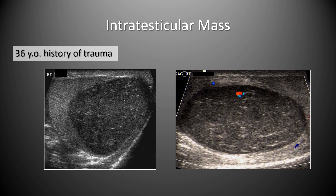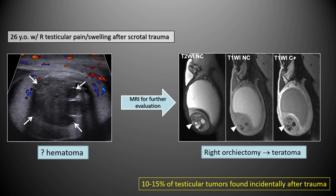A 36-year-old with trauma showed a well-defined, homogeneous, hypoechoic intratesticular mass with mild internal flow on color Doppler. Contrast this with a 26-year-old with right testicular pain after trauma showing a well-circumscribed, mildly heterogeneous solid-appearing mass without internal flow. MRI showed a complex mass with cystic and solid enhancing components; this patient underwent right orchiectomy and was found to have a mixed germ cell neoplasm, primarily teratoma. Notably, 10–15% of testicular tumors are found incidentally after trauma.